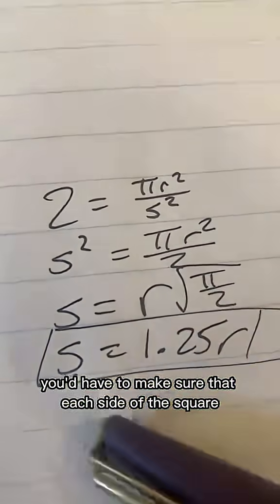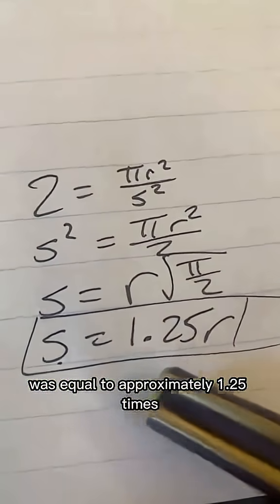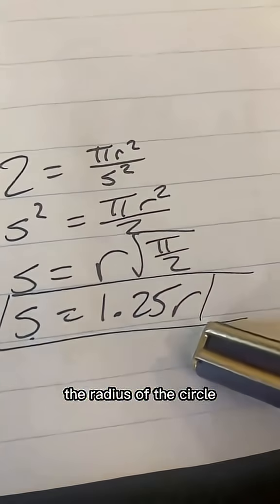Now if you actually wanted to eat exactly half of that pizza pie, you'd have to make sure that each side of the square is equal to approximately 1.25 times the radius of the circle.